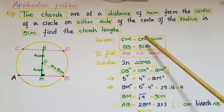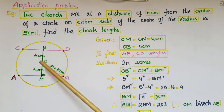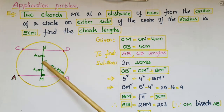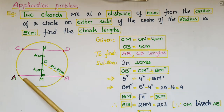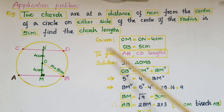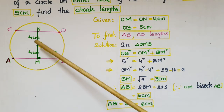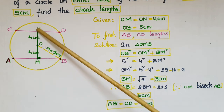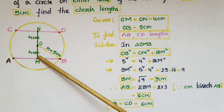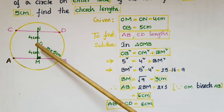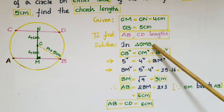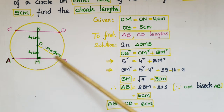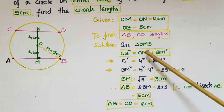So OM equals ON equals 4 centimeters, and the radius of the circle is 5 centimeters, that is OB equals 5 centimeters. We have to find the chord lengths AB and CD. We know that the distances from the center to the chords mean these two lines are perpendicular lines, so this angle is 90 degrees. Take this right angle triangle: in right angle triangle OMB, OB squared equals OM squared plus BM squared, as per the Pythagoras theorem.